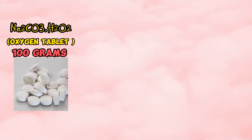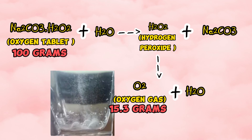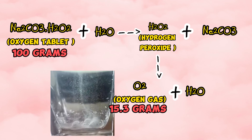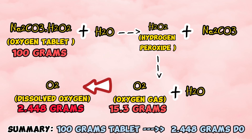When we put 100 grams of an oxygen tablet into water, it provides only 15.3 grams of oxygen gas by a chemical reaction. However, only a maximum of 16% of the oxygen gas can dissolve in the water, and the rest of the oxygen generated escapes into the atmosphere. So 100 grams of oxygen tablet produces 15.3 grams of oxygen gas, but only 2.448 grams can actually be dissolved in the water.